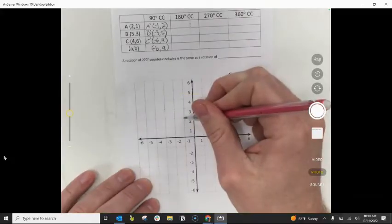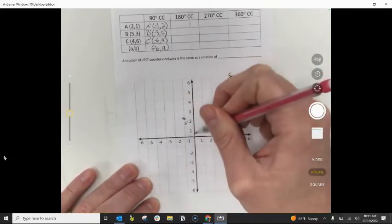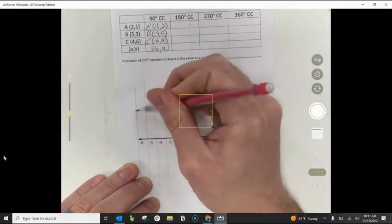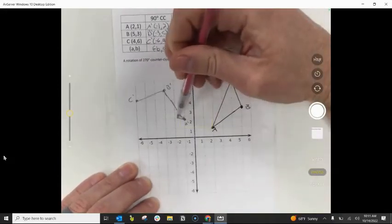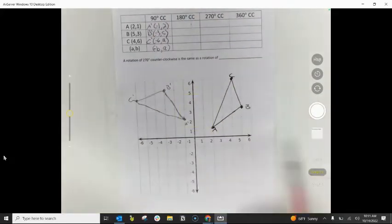Now I'm going to go ahead and plot those two points. We've got (-1,2), there's our A prime. We have (-3,5) and we've got (-6,4), that's our C prime. Now what we're going to do is move into our next rotation, which is 180 degrees counterclockwise rotation.